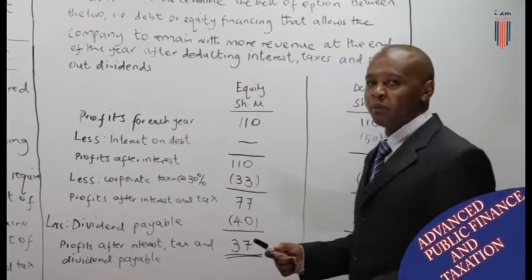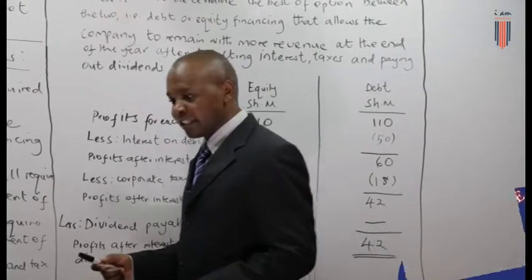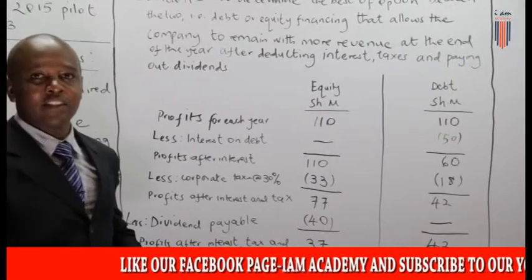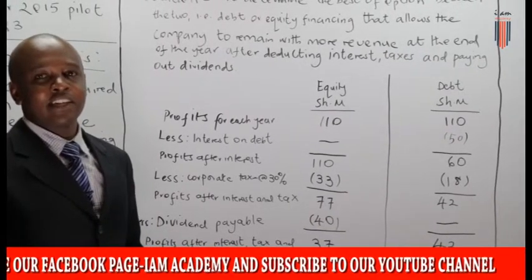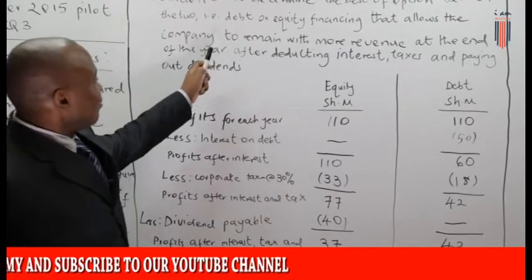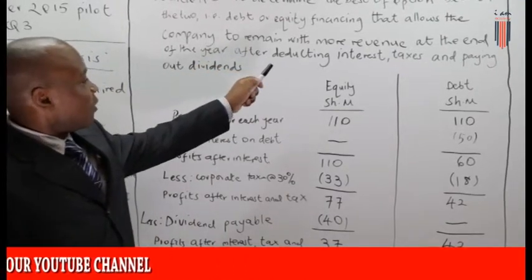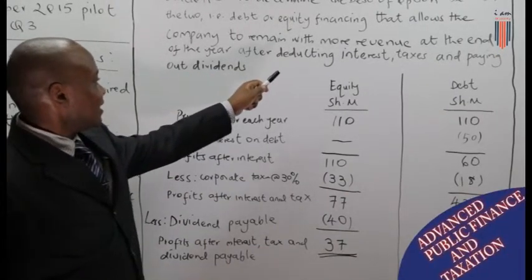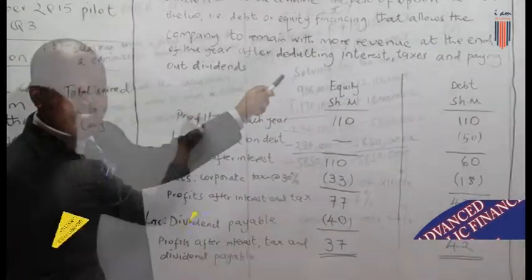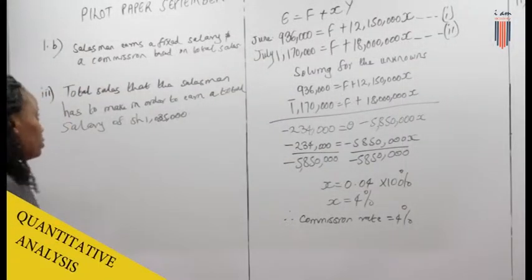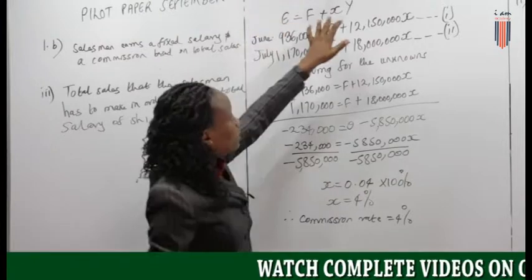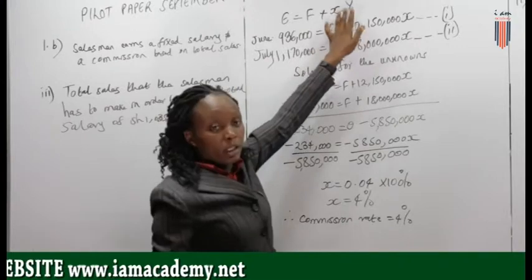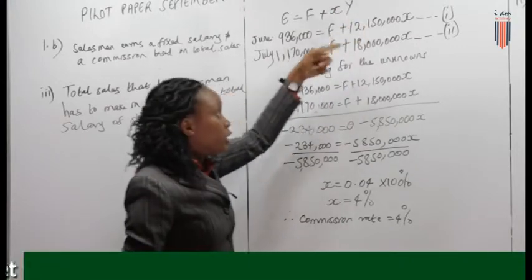From the solution, we are supposed to determine the best financing option of the two — that is debt financing or equity financing — that provides the company more revenue at the end of the year after deducting interest, taxes, and paying out dividends. Remember our equation was: total earnings equals fixed salary plus rate of commission multiplied by the total sales generated by the salesman.